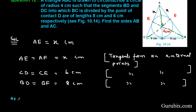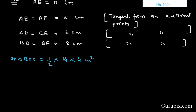Now we shall find the area of triangle BOC. Area of triangle BOC can be calculated by the formula: one-half times base times height. The base is BC, which is 6 plus 8 equals 14 centimeters, and the height is OD, which is 4 centimeters. Therefore, the area of triangle BOC is 28 square centimeters.